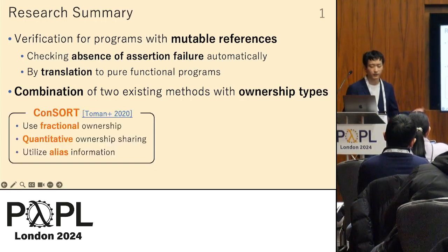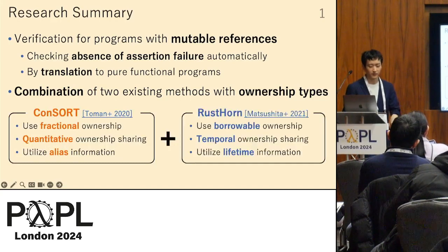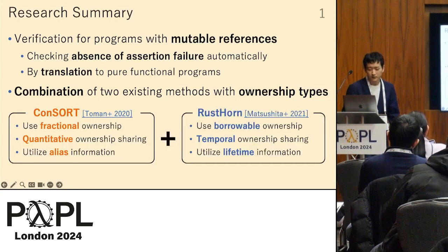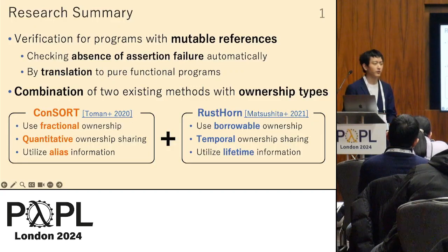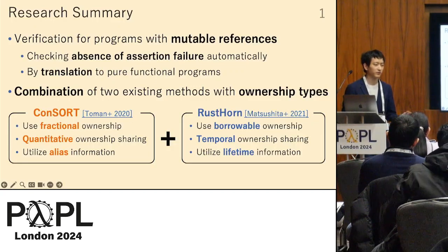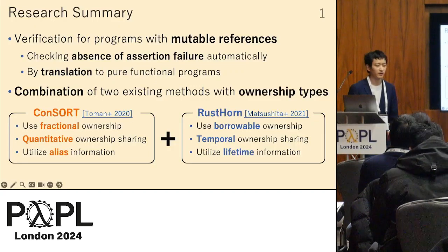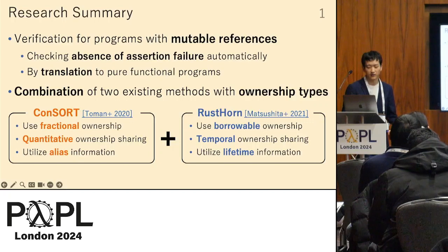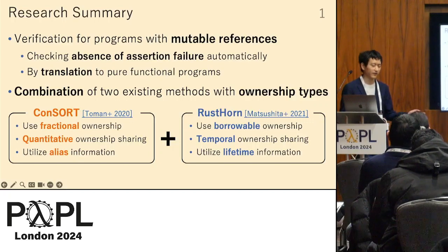The two methods are Consort and RustHorn. Both use ownership types in different manners such that they serve as complementary to each other.